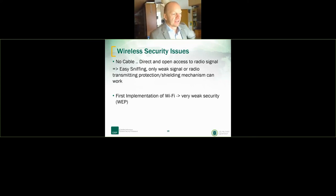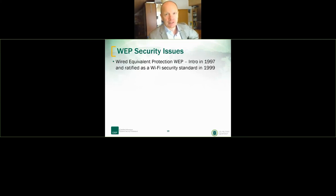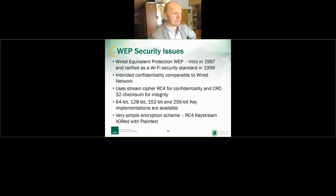The first implementation of Wi-Fi had a very weak security mechanism called WEP — Wired Equivalent Privacy. It simply used an SSID as the name of the Wi-Fi network, which is very easy to detect. WEP was introduced in 1997 and became a standard in 1999. The intention was good — to provide the same confidentiality as a wired network — using an RC4 stream cipher with different keys, where the RC4 key stream is XORed with the plaintext. Very simple encryption, not really sufficient.